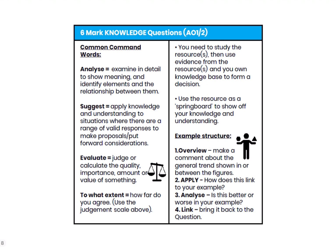Six-mark knowledge questions, assessed on AO1 and AO2, normally have four command words: analyse — looking at a relationship perhaps between a figure and how well your case study meets it; suggesting reasons why something is the case; evaluating; and 'to what extent,' though that's less common on a six-marker. Look at the resource, think about your case study — does it prove or disprove the graph or data, or does it exemplify the point made in a photograph? Part of the credit is for using the figure and relating it to the question context.